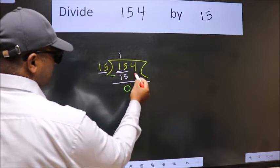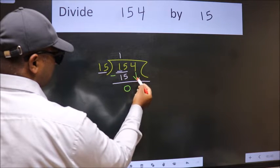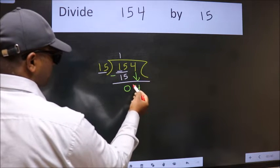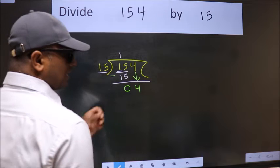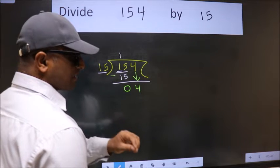After this, bring down the beside number, so 4 down. After this step, the mistake happens and the mistake is this.